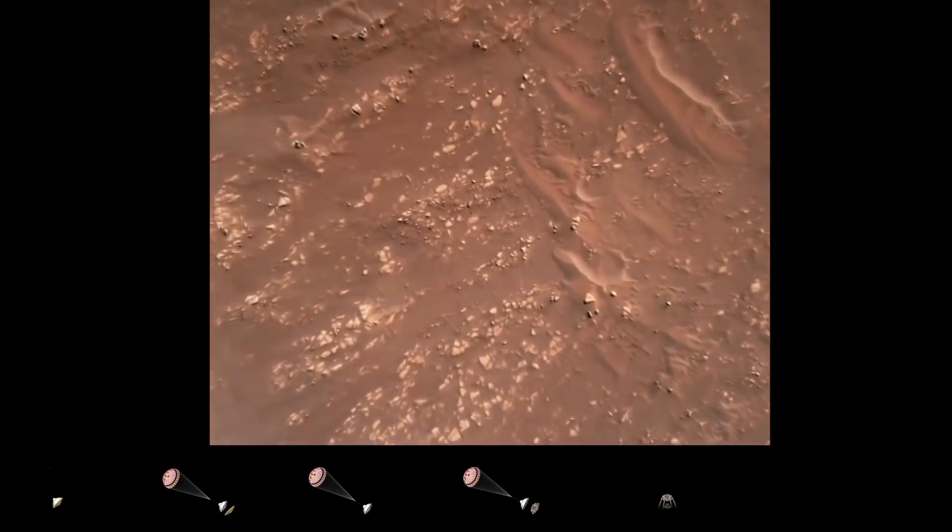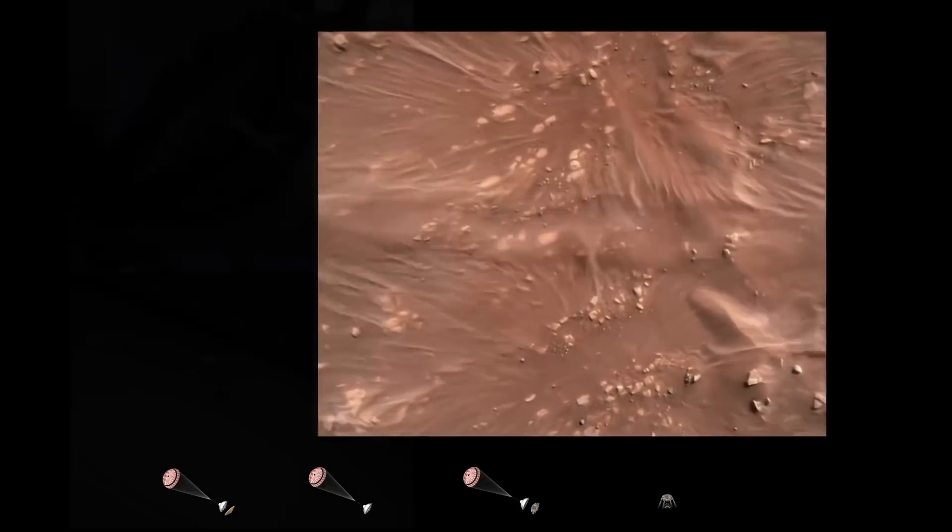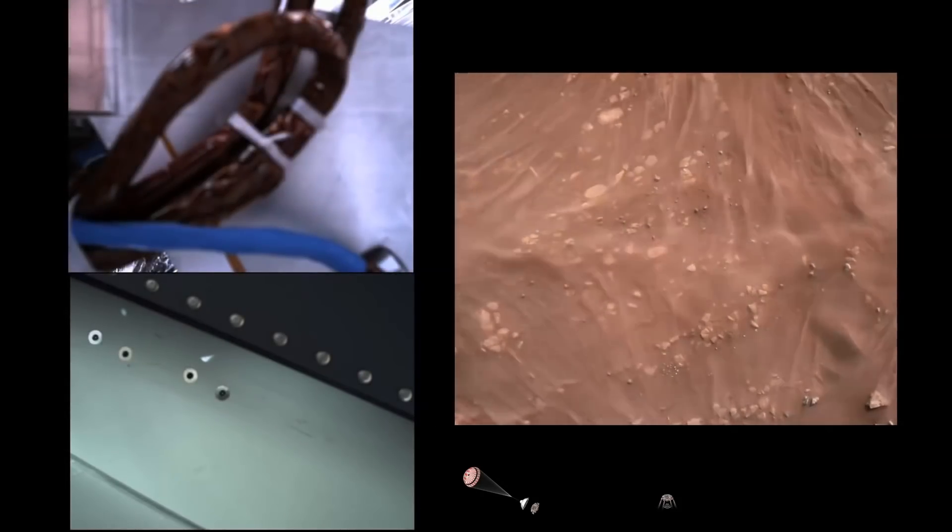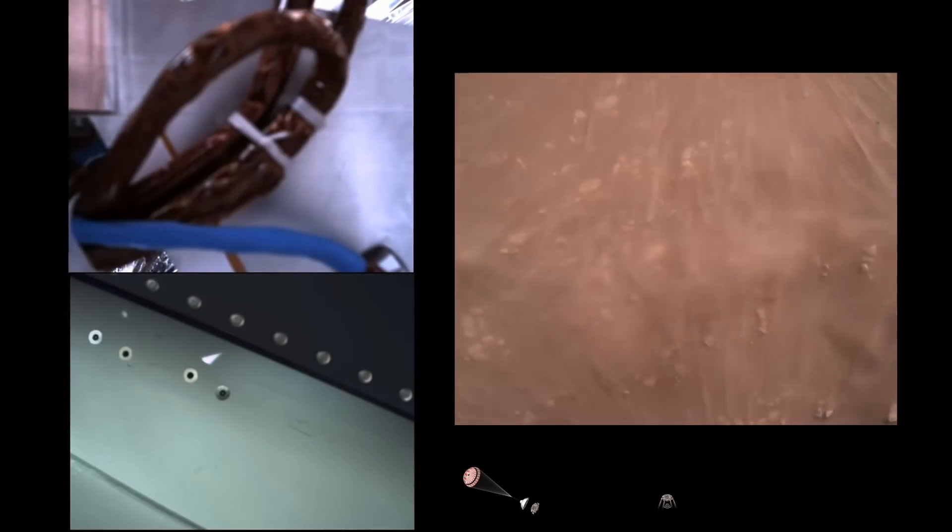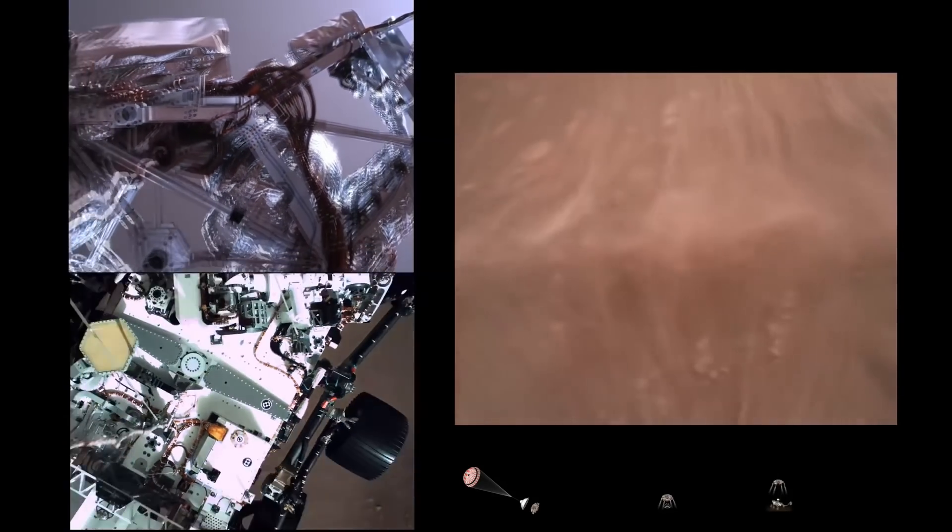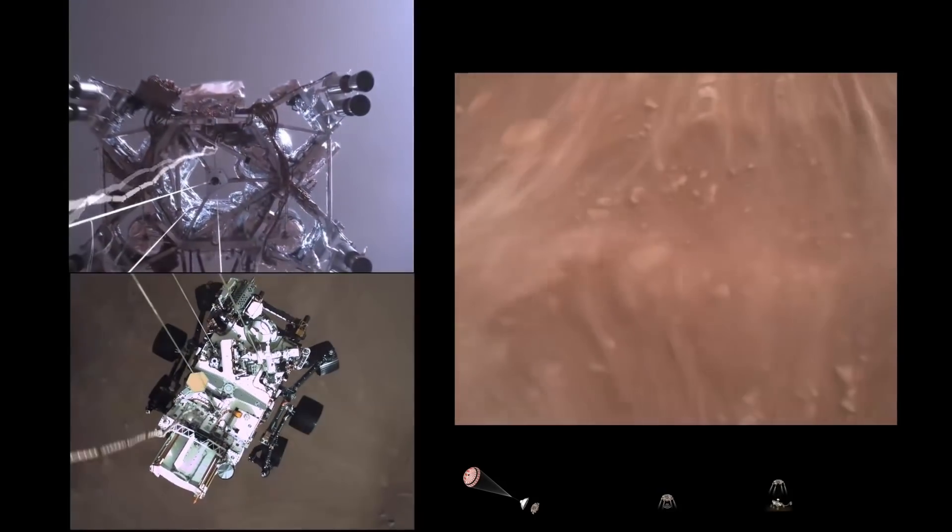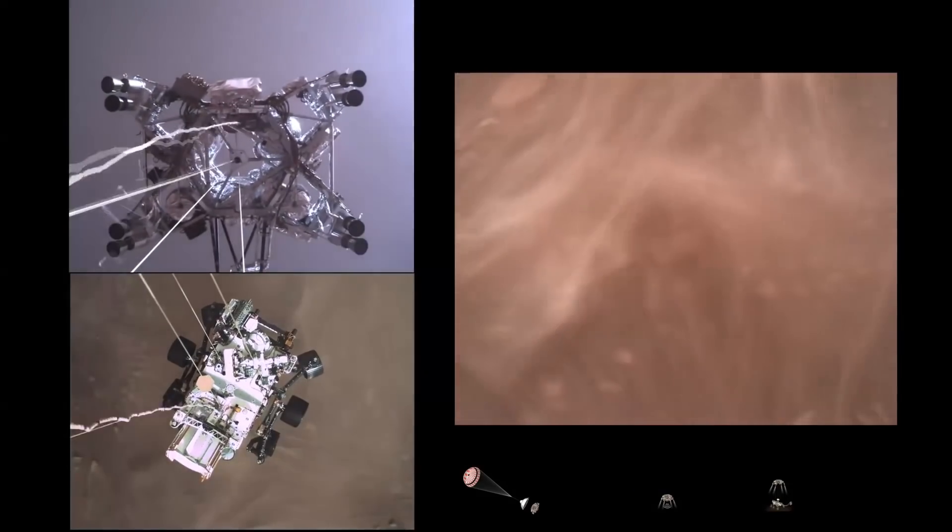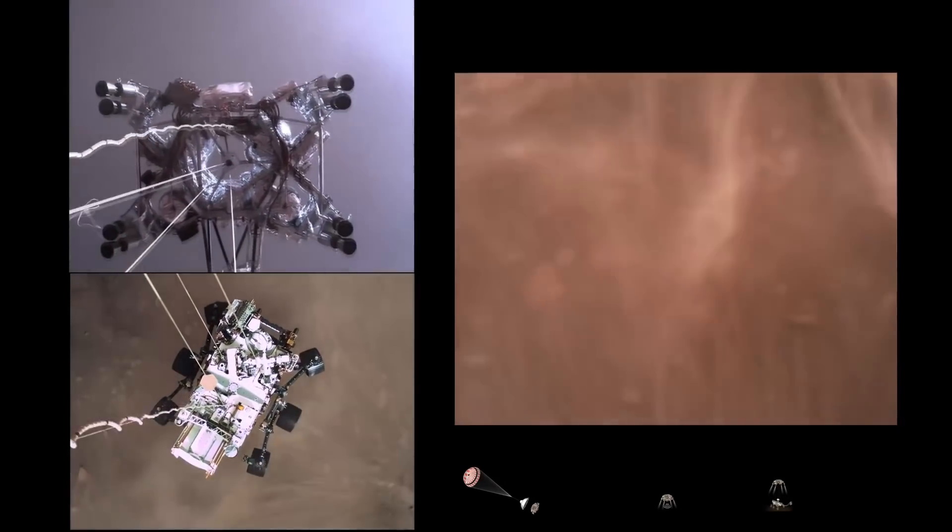We have started our constant velocity accordion, which means we are conducting the sky crane maneuver. Sky crane maneuver has started. About 20 meters off the surface.